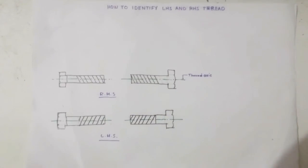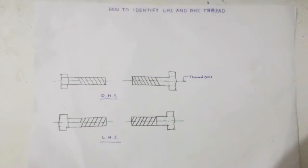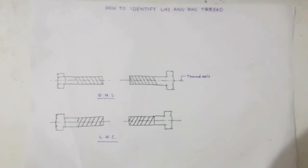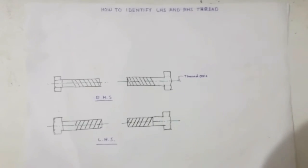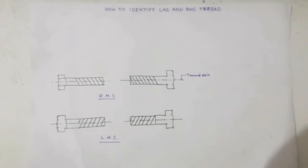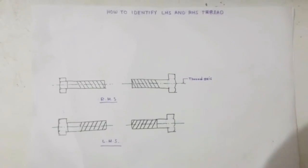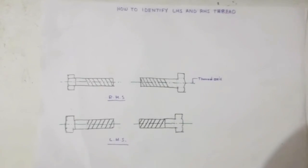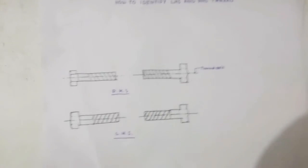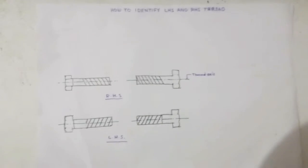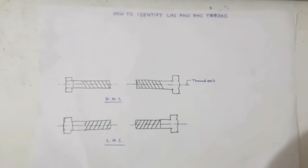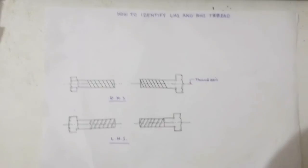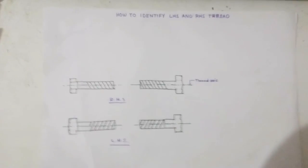Hello friends. In this video I am going to explain how to identify left hand side and right hand side thread. The basic fact about thread is that if the thread is a right hand side thread and we turn it in clockwise direction it will go inside the nut, and if it is a left hand side thread and we turn it clockwise it will come out.